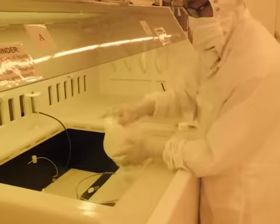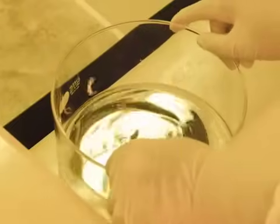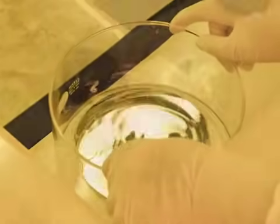The soluble regions of photoresist are removed using a developer solution specific to the type of photoresist used. Finally, the wafer is rinsed and dried, leaving the pattern photoresist on the wafer.